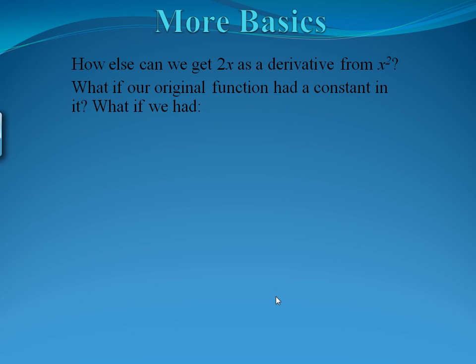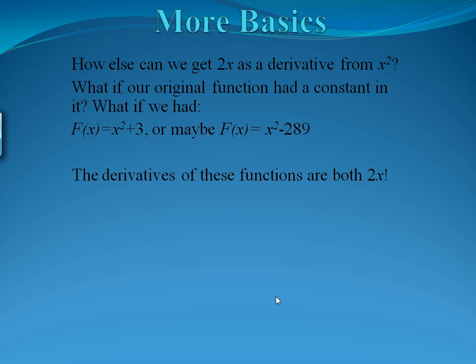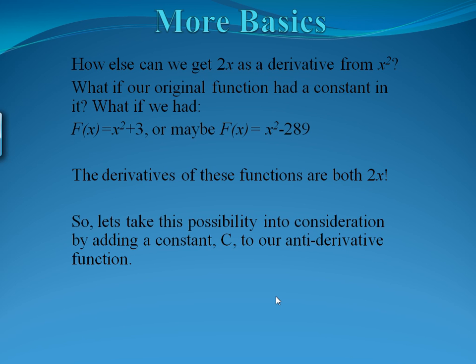How else can we get 2x as a derivative from x squared? What if our original function had a constant in it — if capital F of x was x squared plus 3, or x squared minus 289? Notice the derivatives of these functions are both 2x, because when you take the derivative of a constant, it disappears. So let's take this into consideration by adding a constant c to our antiderivative function. If capital F of x is x squared plus any constant c, then capital F prime of x equals little f of x, which will be 2x.